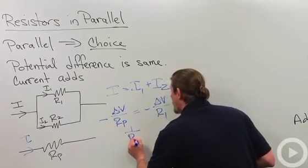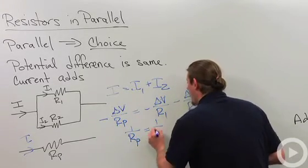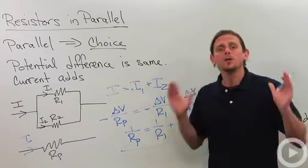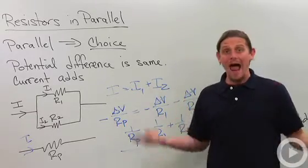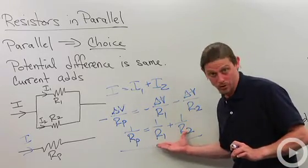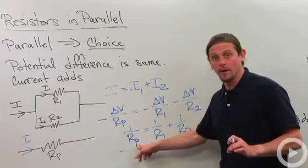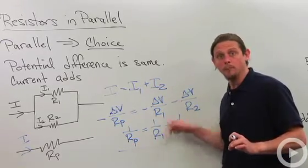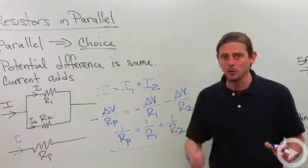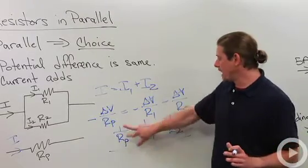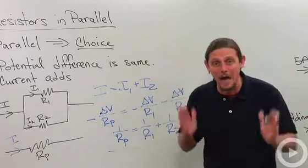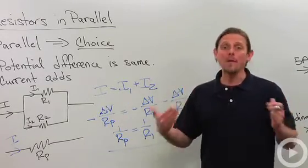One over r parallel equals one over r1 plus one over r2. So adding resistors in parallel is more complicated than adding them in series. When I add them in series I just add. When I add them in parallel, what we say is that the reciprocals add. So one over the effective resistance equals one over r1 plus one over r2. Now it's very, very tempting but absolutely incorrect to try to flip this upside down and say, oh that just means r parallel equals r1 plus r2. That is not true.